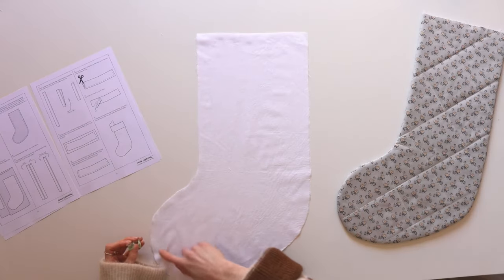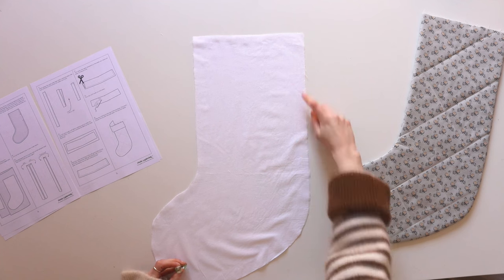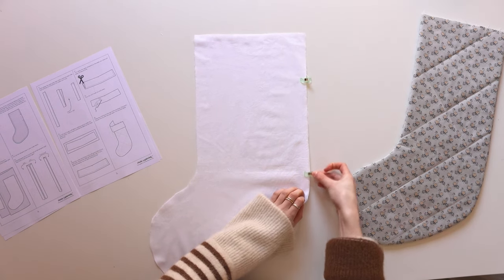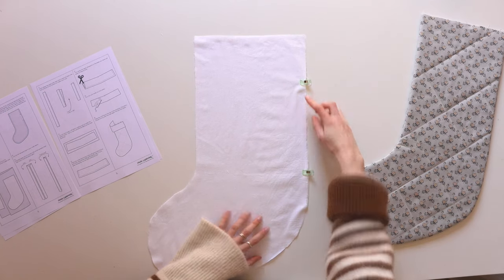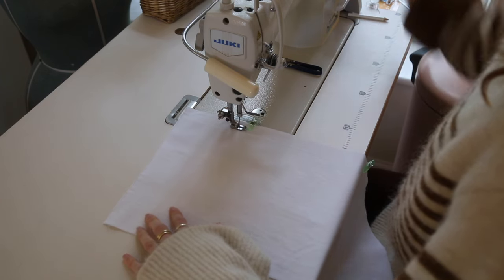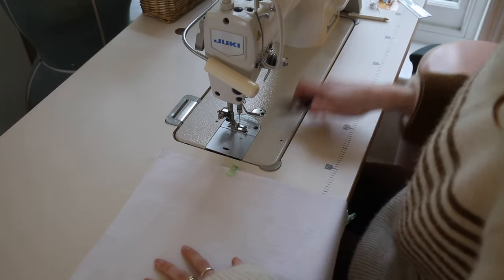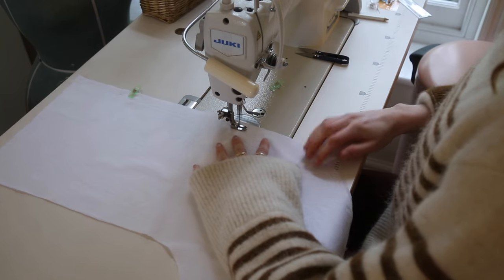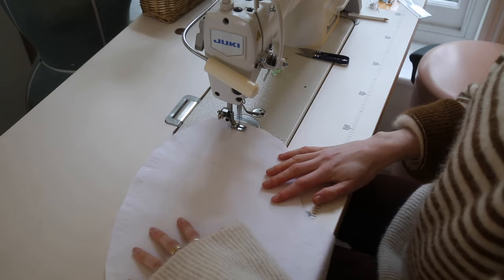For the stocking lining we're going to start with both pieces facing good sides together and we're going to stitch all the way around but we're going to leave a gap so that you can pull the whole stocking through this hole at the end. It's a good idea to mark the hole with some pins so that you remember not to sew that bit. So go ahead and stitch around the stocking with a 1.5 cm seam allowance.